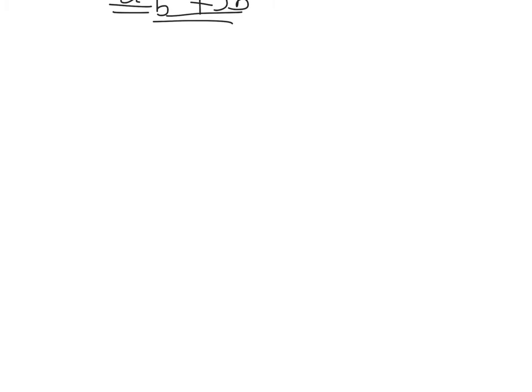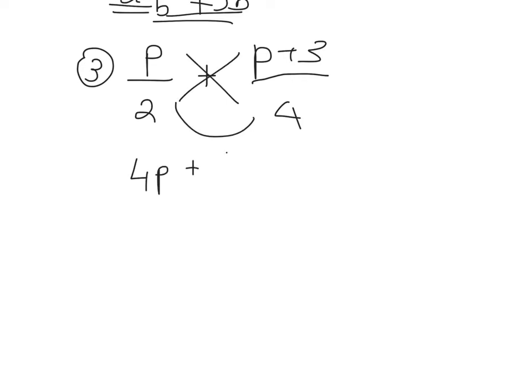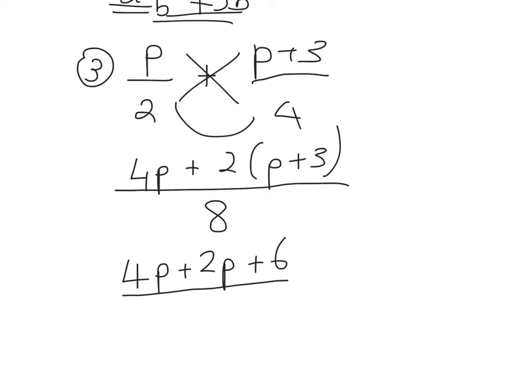Example 3. P over 2 plus P plus 3 over 4. So kiss and smile again. P times 4 is 4P plus 2 times P plus 3, so that's 2 bracket P plus 3 over 2 times 4 which is 8. So that's going to be 4P plus 2P plus 6 over 8.